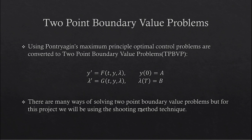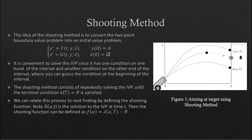In our case, for our two-point boundary value problem shown here, our initial condition is A and our terminal condition is B. So how do we solve these two-point boundary value problems? Well, we actually have well-established methods to solve initial value problems. For this project, we will be using the method that converts solving two-point boundary value problems into an initial value problem by this procedure that is analogous to shooting a target and adjusting the angle of shooting. This procedure is called the shooting method.